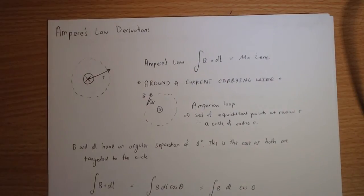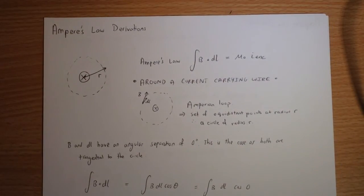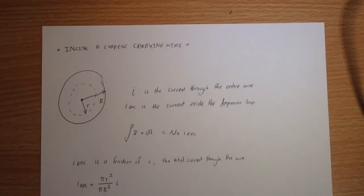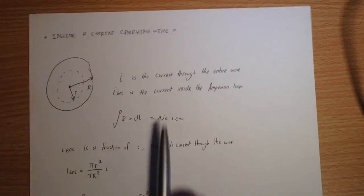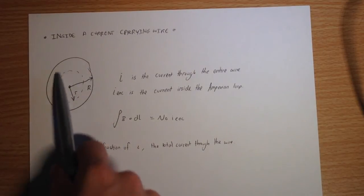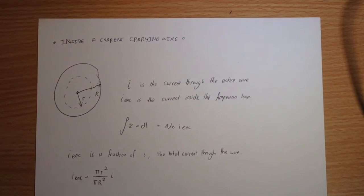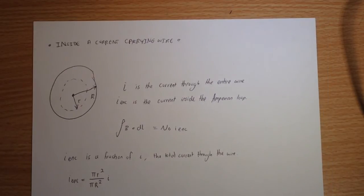So that's how we go about deriving, for some distance, little r. So now we consider, inside a current-carrying wire, this time we need to consider two things. We need to consider little r as being the radius of our Ampereian loop, which is somewhere inside this current-carrying wire, which is the full circle, the non-dotted circle, is our actual wire, and that has a radius of capital R, our wire.